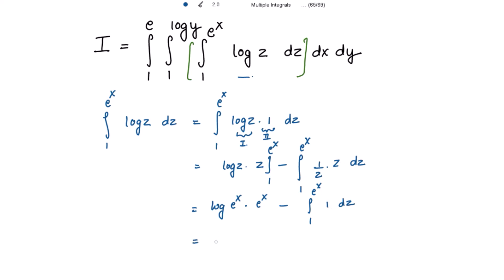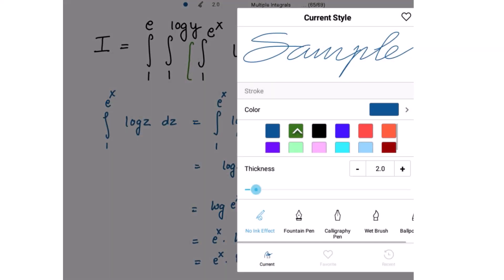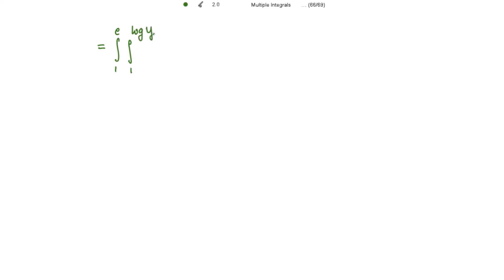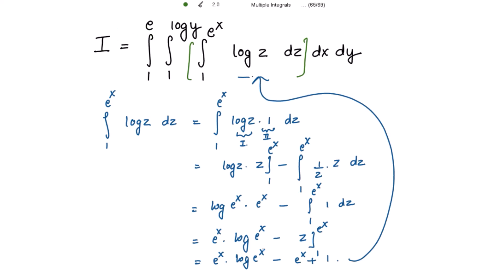The z and z cancel, leaving e^x · log(e^x) minus e^x times 1. Noting that log(e^x) = x, this simplifies step by step.